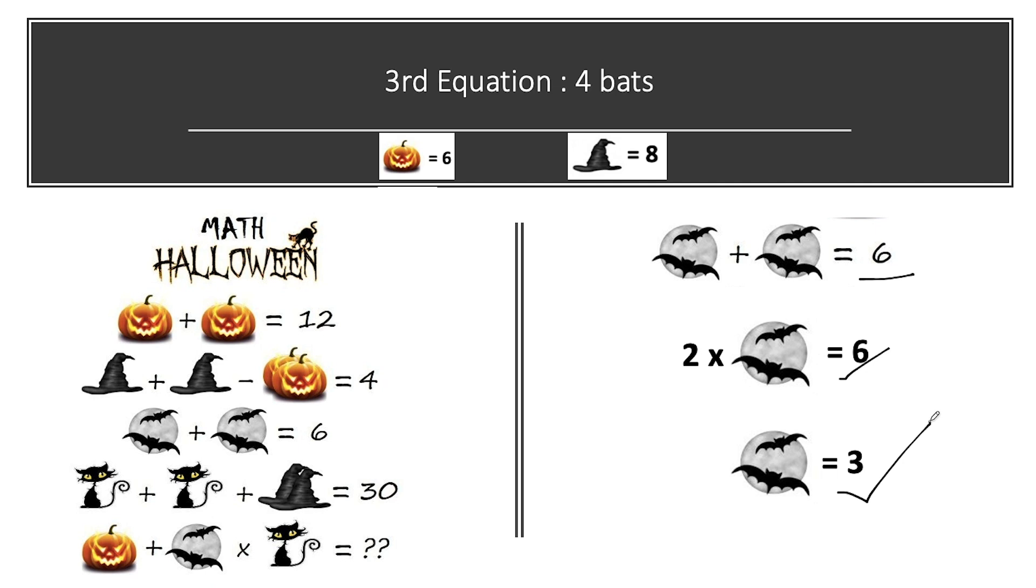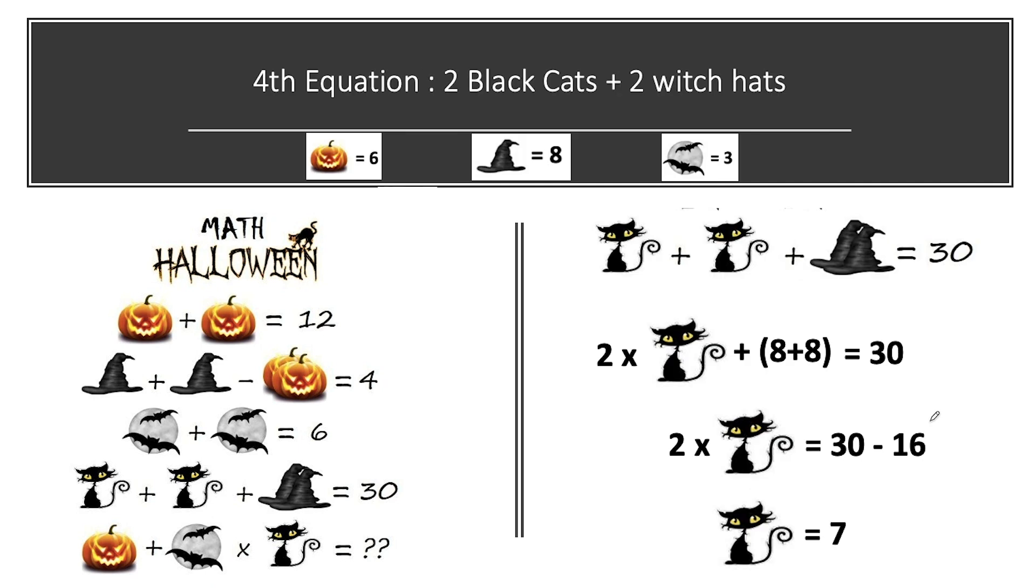Now jumping on to our fourth equation. In the fourth equation we have 2 black cats and 2 witch hats. And their sum is equal to 30. We know value of hat that is equal to 8. Putting the value of hat here in this equation and solving this equation to get the value of cat.